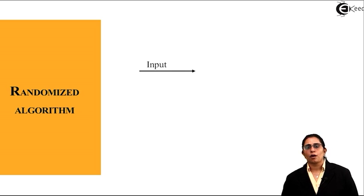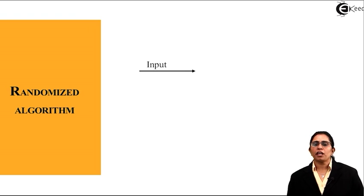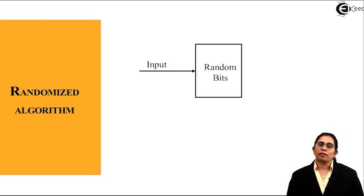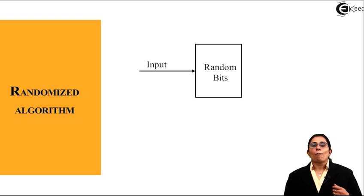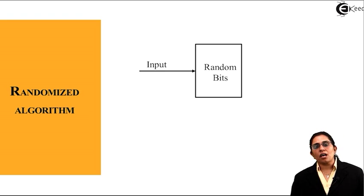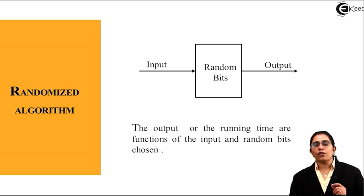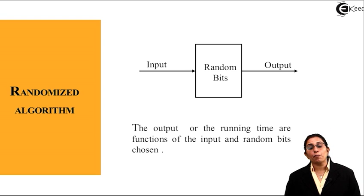We have the input but in the algorithm part we introduce something known as a random bit. Random bit is a bit which is generated by an algorithm designed to produce random numbers or random inputs. That gets added to your input and changes the nature or required output. So it is defined as the output or running time are functions of input with the random bit chosen.